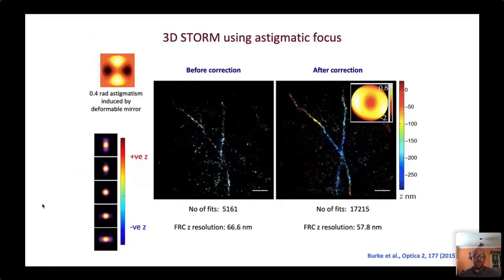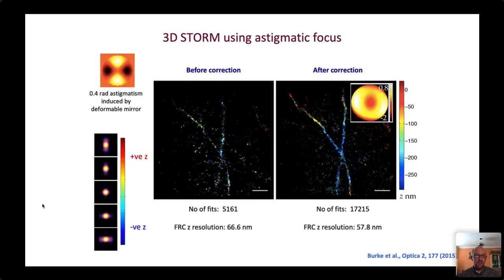We've used the deformable mirror to intentionally introduce astigmatism to shape the point spread function, enabling us to extract the axial position of the emitter — not just its lateral position on the camera but also whether it's above or below focus. The colour-coded images show the axial position of emitters in microtubules. Comparing before and after aberration correction, we see far more fits included in the final image after correction, because the data fits better the model used to extract the super-resolution image.